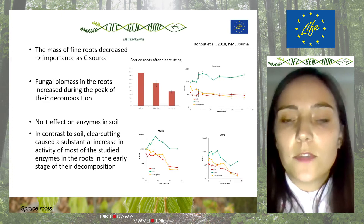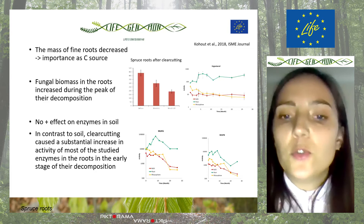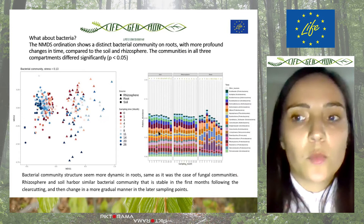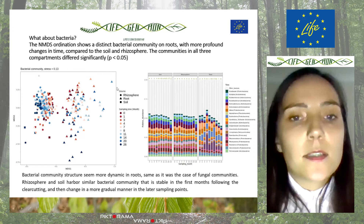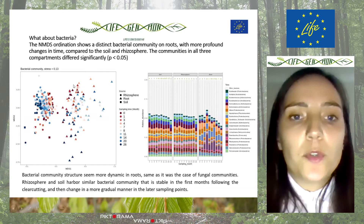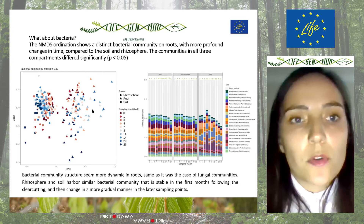All of this showed us that the root litter represents a new decomposition hotspot for fungi. Naturally, we wondered what happened with bacteria. Looking at this NMDS graph, we can see there is a distinct bacterial community on the roots, shown here in triangles, with more profound changes in time shown with different colors.